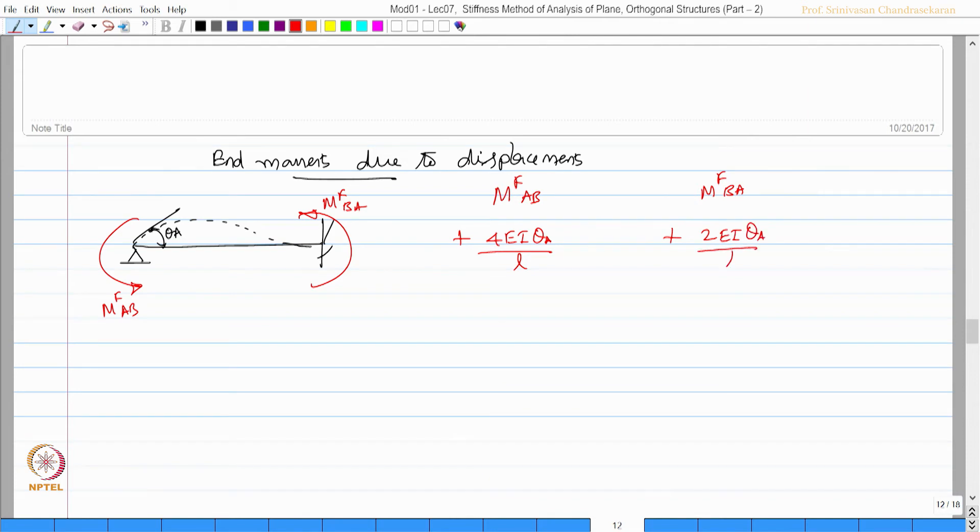One can also find end moments due to displacements, because the earlier were end moments due to loads. Let us take a beam this way, give a rotation which will be θ_A. Then this will be M_AB and this will be of the same order M_BA. M_AB and M_BA will be plus 4EI·θ_A/L, this is going to be plus 2EI·θ_A/L, where this is the L.